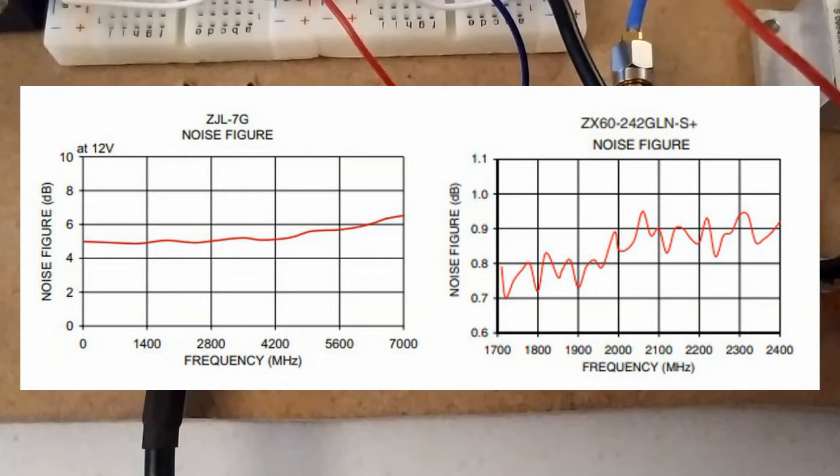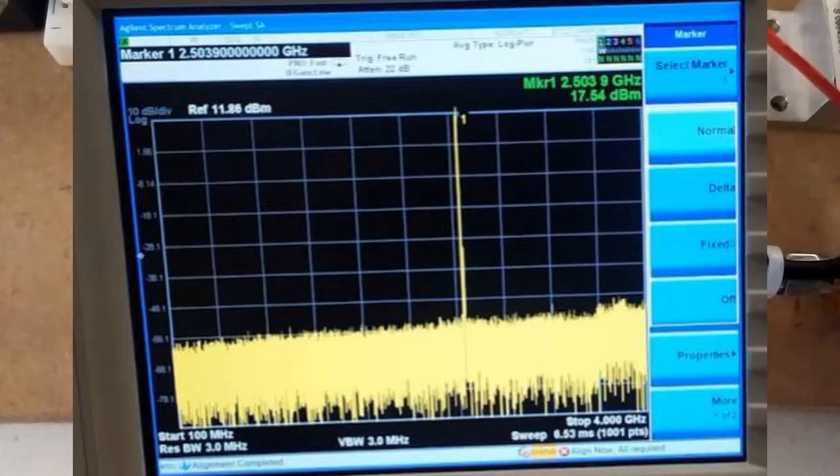But I did test this amplifier with a spectrum analyzer giving it an input frequency of 2.5 GHz so it's providing a gain of about 26.5 dB and no problems here yet.